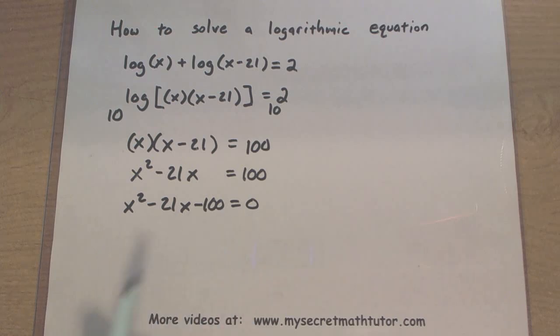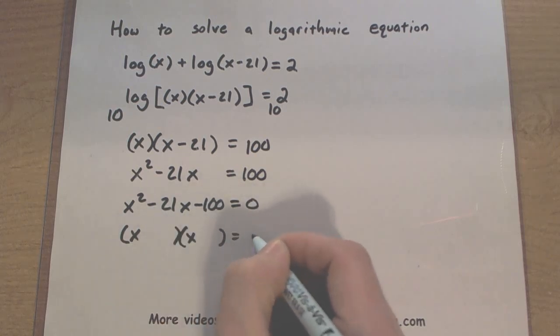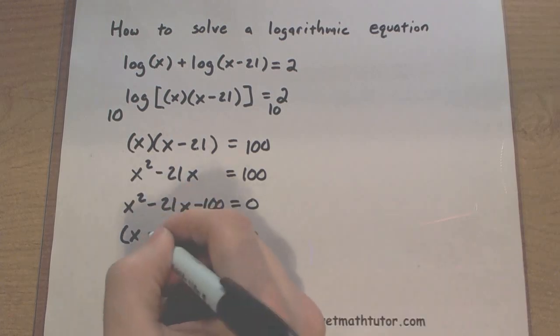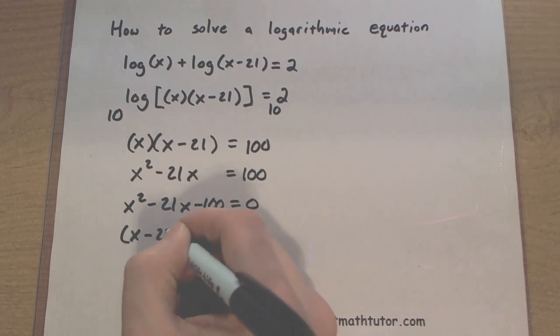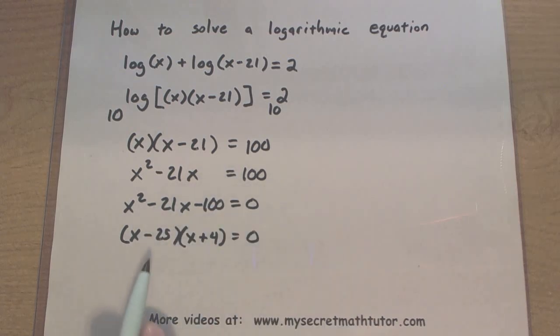And since it is quadratic, these are really good to solve using factoring. I know x times x will give me an x squared. What two numbers will multiply to give me 100, but add to be a negative 21? I think a negative 25 and a positive 4 will do it. So negative 25 multiplied by 4, yep, that equals a negative 100. Let's see, when these add together, negative 21, alright, things are looking great.